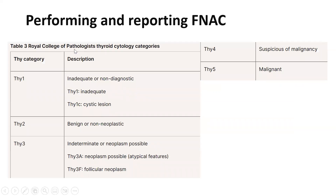How do we report FNAC based on the Royal College of Pathologists criteria, as mentioned in the NICE 2022 guidelines? Thy1 is inadequate or non-diagnostic — Thy1 is inadequate and Thy1C is a cystic lesion. Thy2 is benign or non-neoplastic. From Thy3 onwards, the problem starts — it is indeterminate or neoplasm possible. Thy3A is neoplasm possible with atypical features. Thy3F is suggestive of follicular neoplasm, and diagnostic hemithyroidectomy is needed to rule out adenoma versus carcinoma.